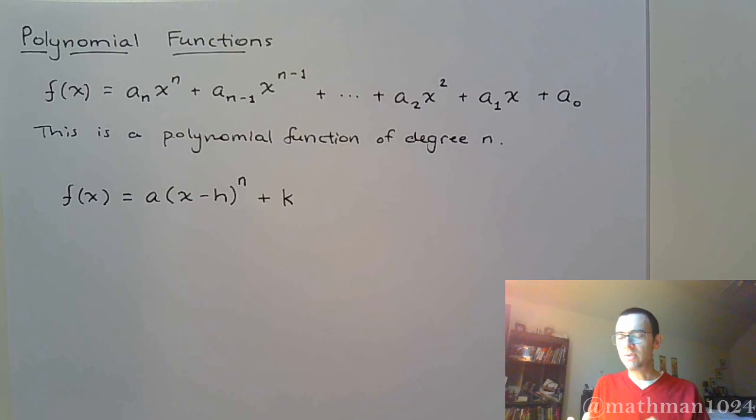In the last few sections, I gave you information about it. I told you here were some zeros, or here were some factors, and you were able to find everything else.